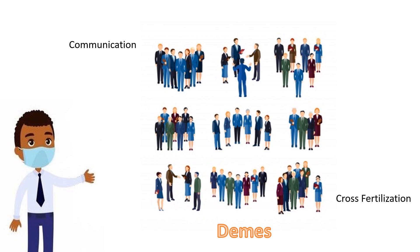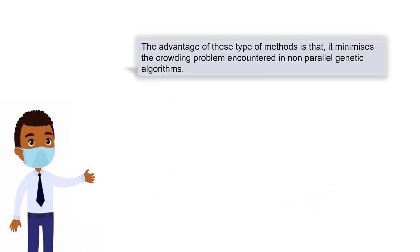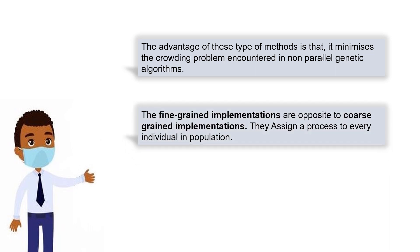The transfer between demes occurs by migration process, where individuals from a deme are copied or transferred to other demes. The advantage of these types of methods is that it minimizes the crowding problem encountered in non-parallel genetic algorithms.